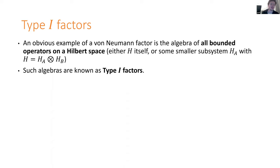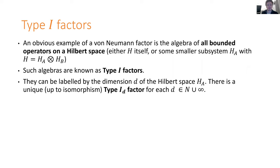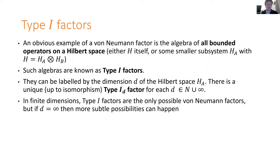There are various types of von Neumann factors. The first are called type one factors — this is the obvious example of just the algebra of all bounded operators acting on some Hilbert space, or on some subsystem of H. If H equals H_A tensor H_B, then we could consider all algebras acting on just this subsystem H_A — that's a type one factor. These factors are labeled by the dimension of the Hilbert space H_A that they act on. In finite dimensions, these are actually the only von Neumann factors that can possibly exist. But in infinite dimensions, there are more subtle possibilities.